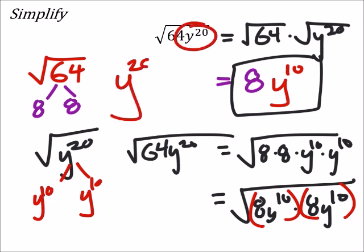This is really y to the power of 20 to the power of one half. What's 20 times one half? That's a 10 that we got.